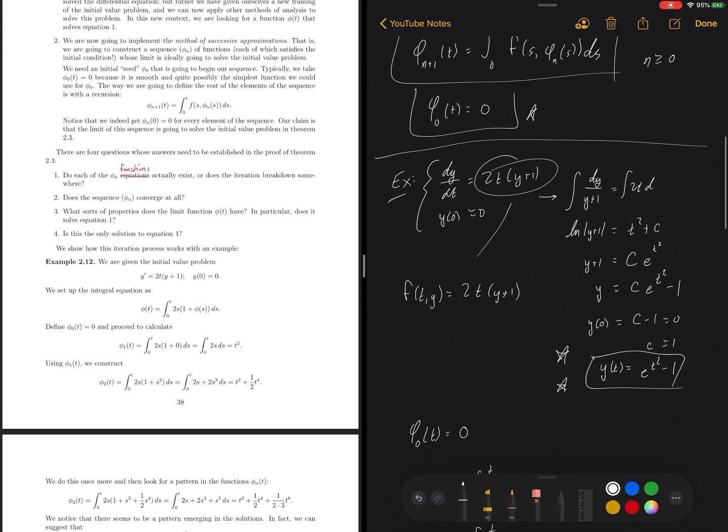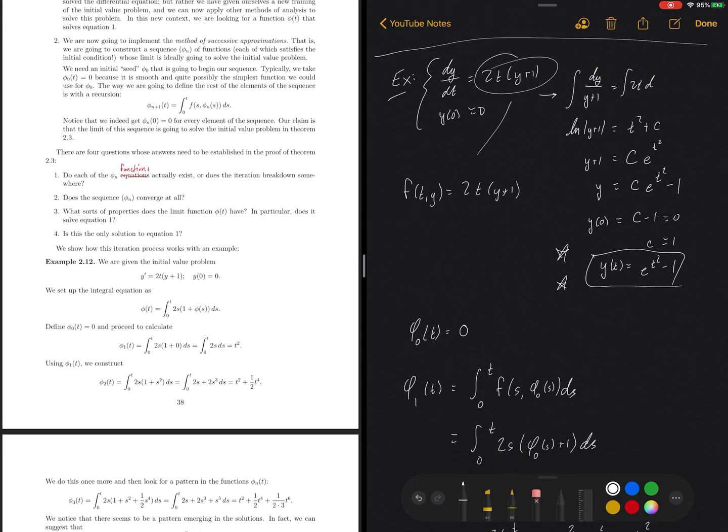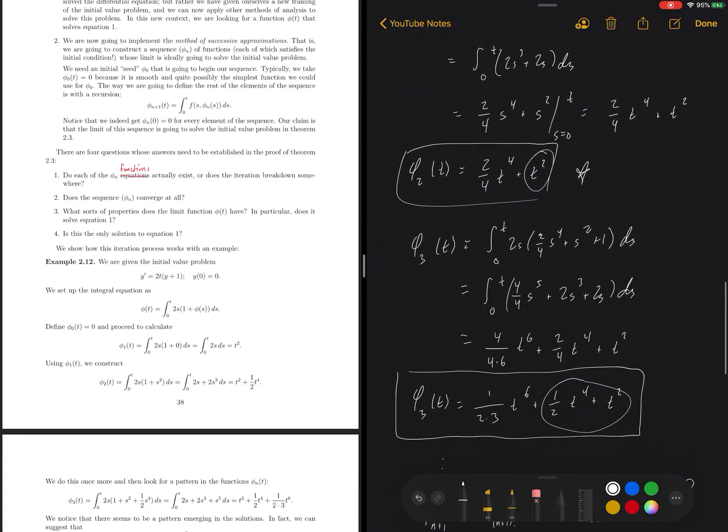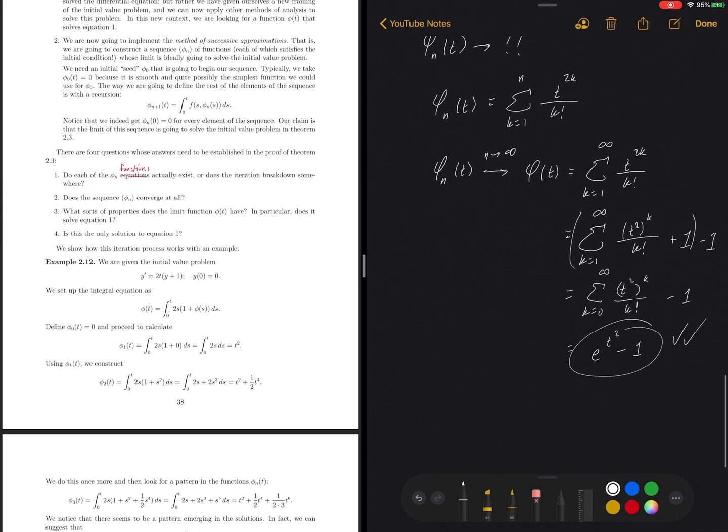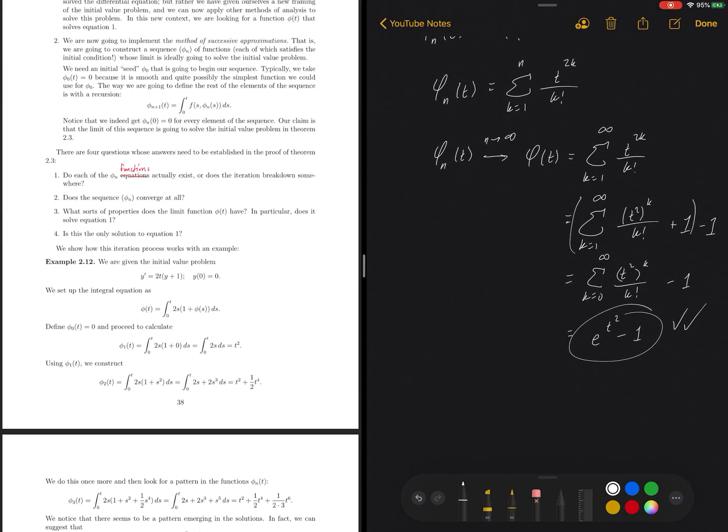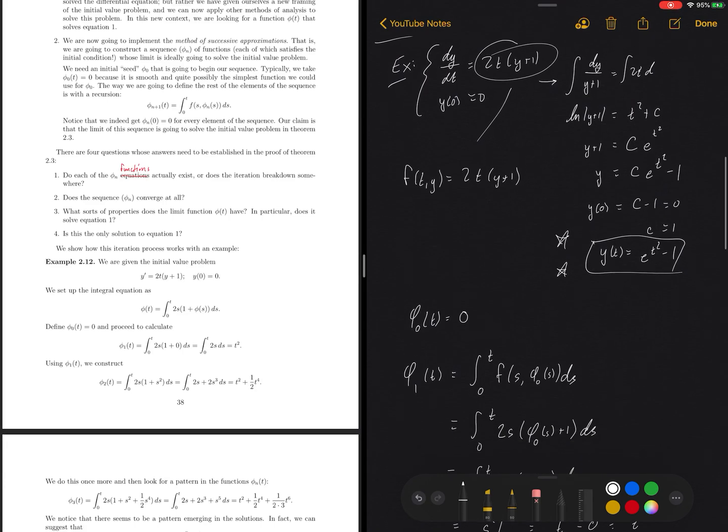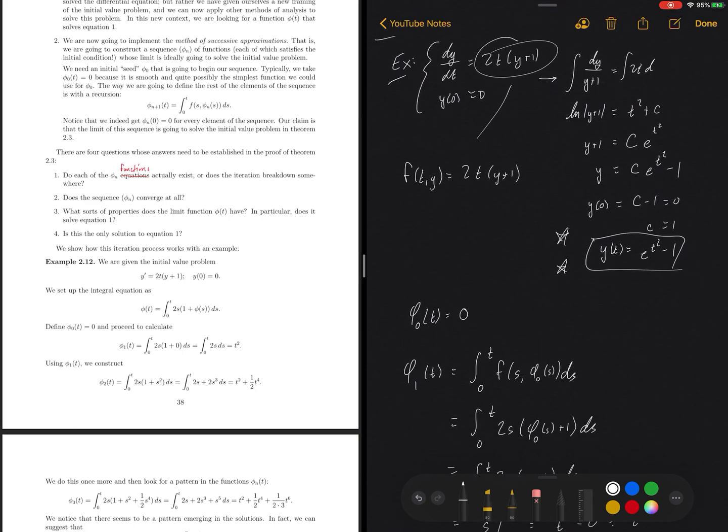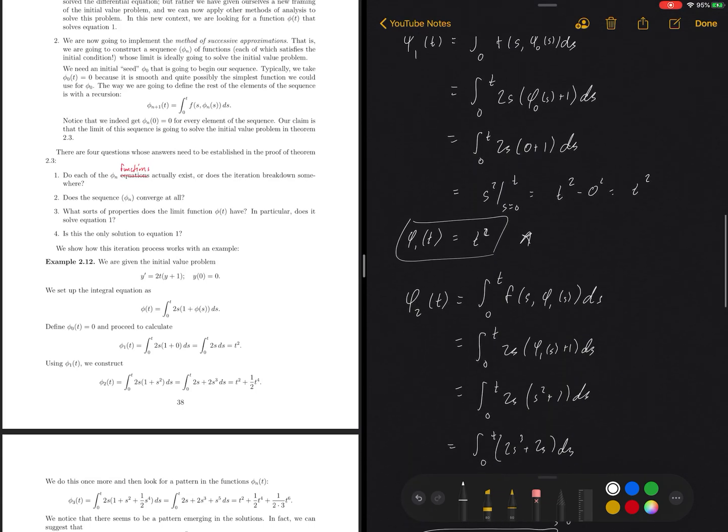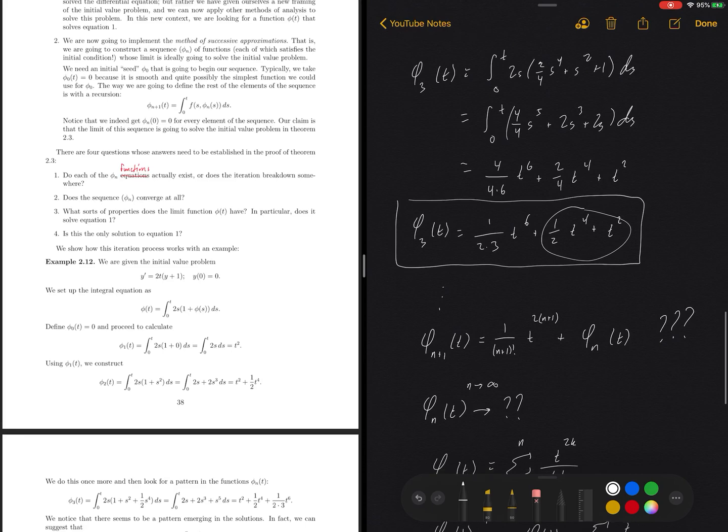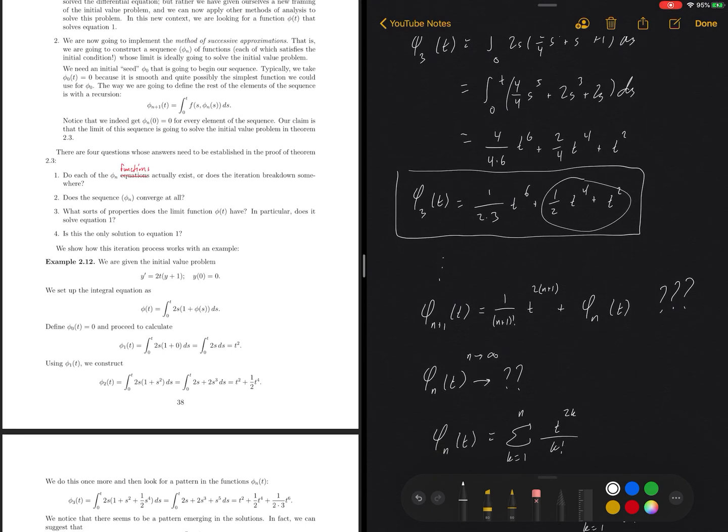So this is by no means a proof for the general existence of uniqueness theorem, but it is a really good proof of concept for how Picard's method should work. And we would like to be able to do this in general for an arbitrary differential equation when we don't know what the right-hand side looks like, when we don't know what this rate function looks like. So the last video in this series is going to be the proof. We're actually going to do this in full generality.